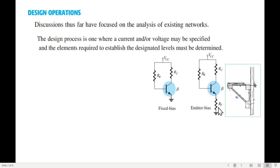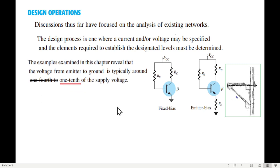Now the question is, what is the value of RE? We have to say that RE is voltage across RE. The examples examined in this chapter reveal that the voltage from emitter to ground is typically around one-fourth to one-tenth of supply voltage.